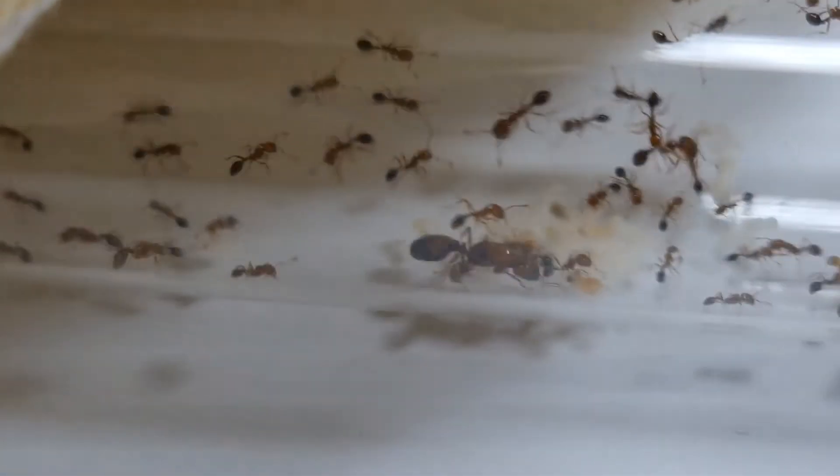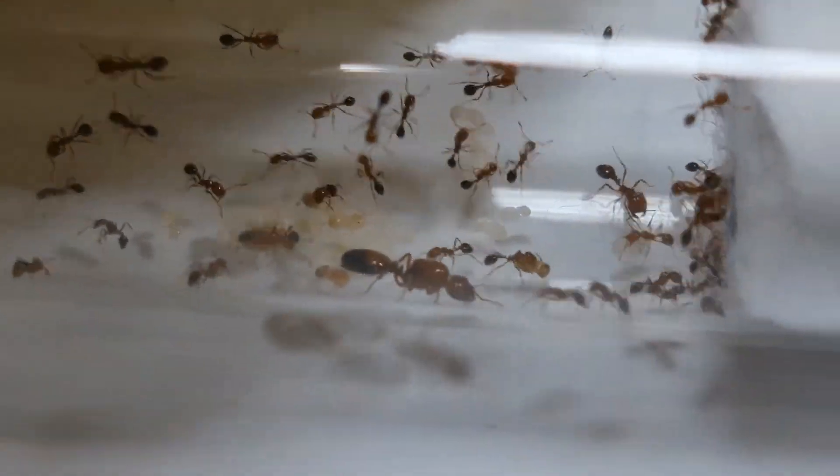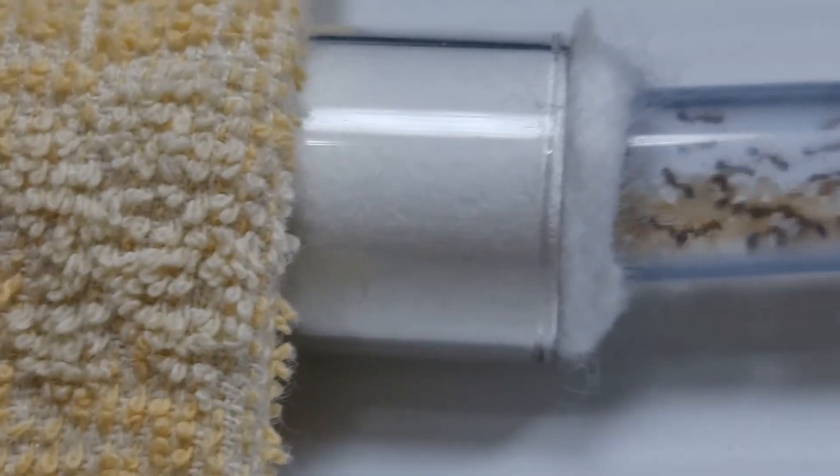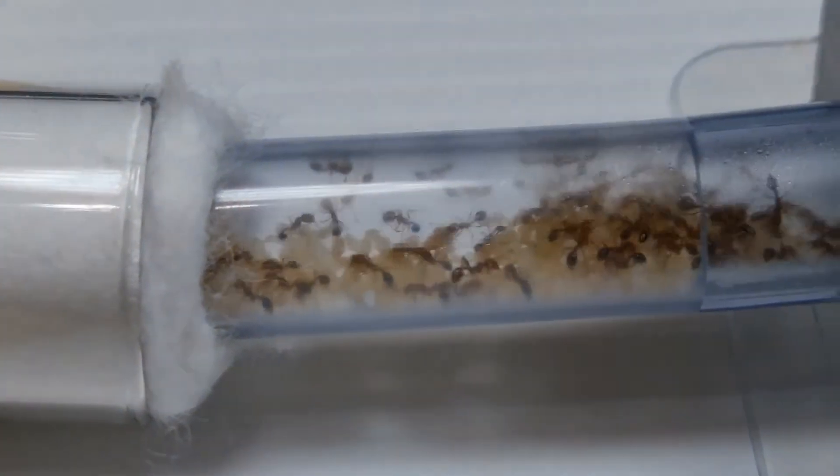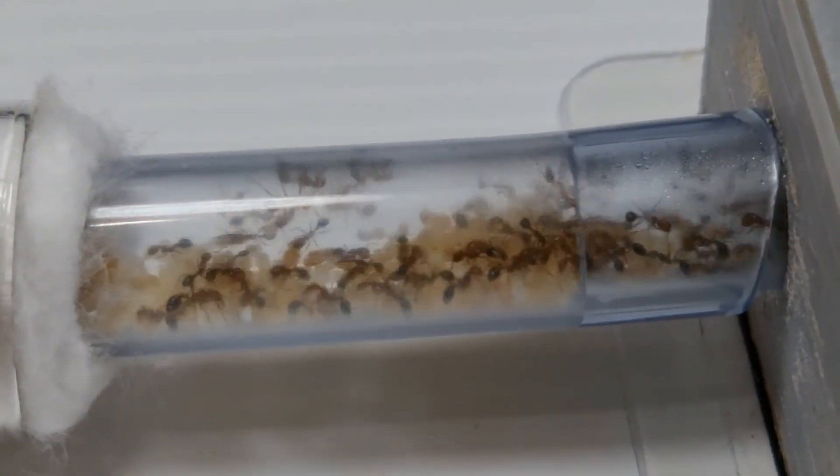Before we do that, let me cover up the flexible tube part to heat it up just a little more so that they will move in just a little. This will make it easier for me to unplug and insert the blocker cotton.